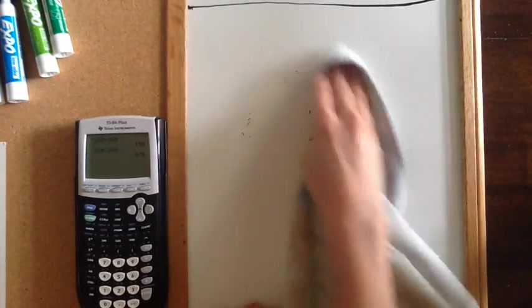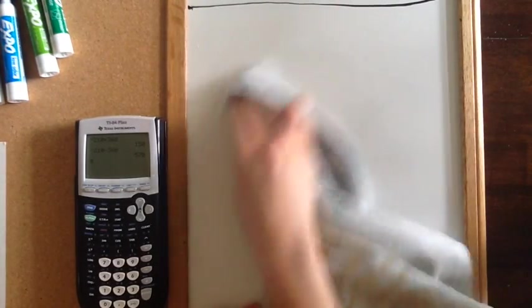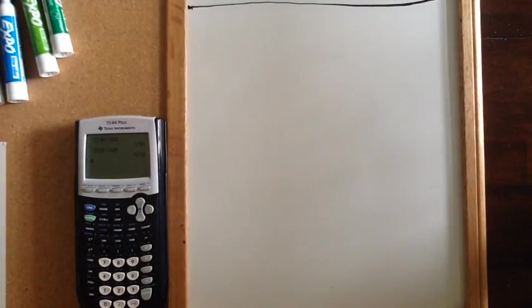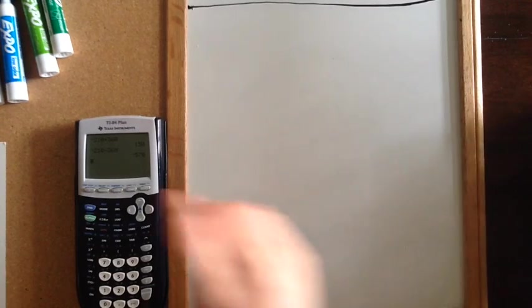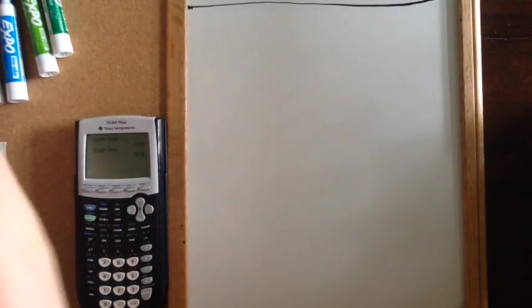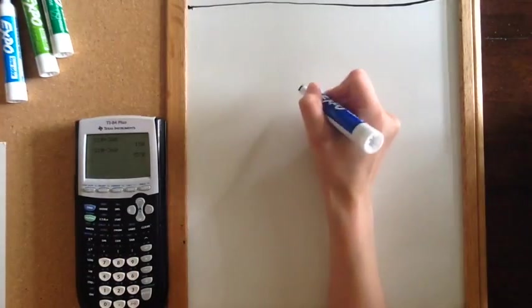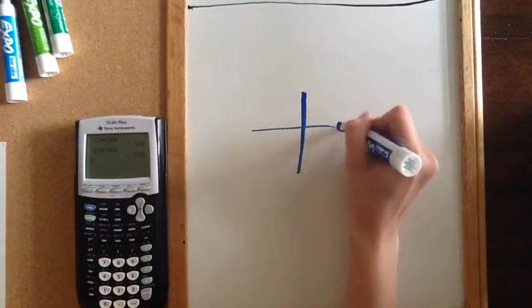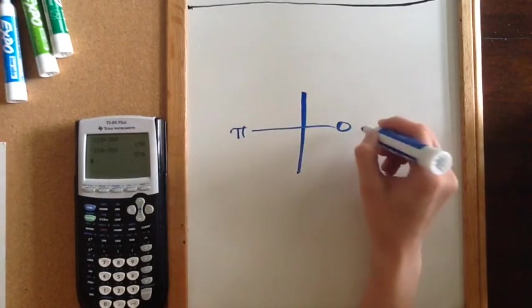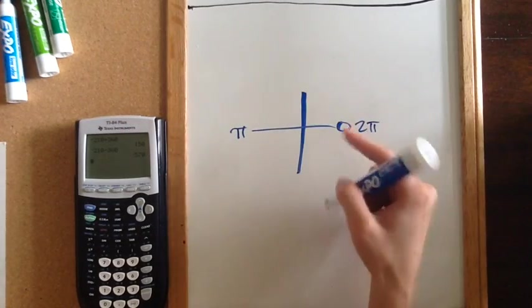Now, if we are going to find coterminal angles in radians, rather than add and subtract 360, we need to add and subtract 2π, because remember that in radians this is 0, this is π, and this is 2π, so our full revolution is 2π.